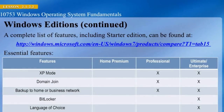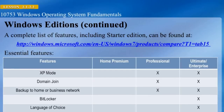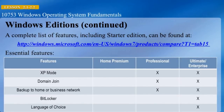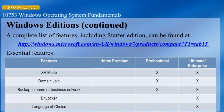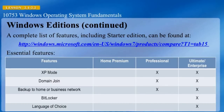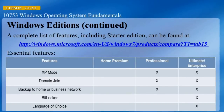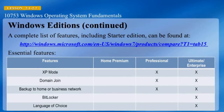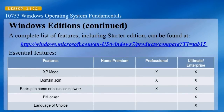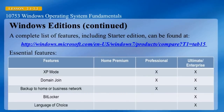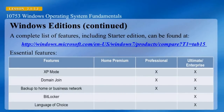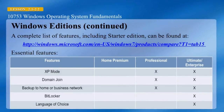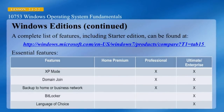You can follow this link to view the different editions' capabilities. On this slide we're looking at some of the business requirements like XP mode, domain join, backup to home or business, and language of choice. These features are found in Professional or higher versions, including Ultimate and Enterprise.